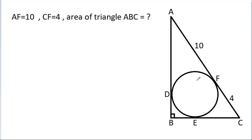In this video, we have been given a circle inside a right angle triangle where AF is 10 and CF is 4. We have to find the area of triangle ABC.